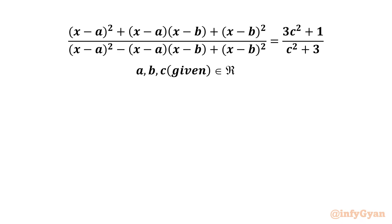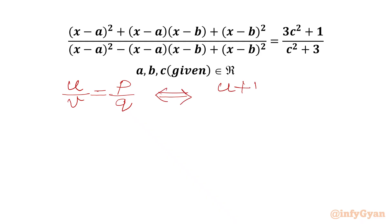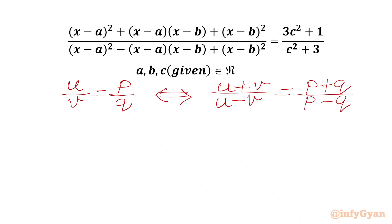Let's get started by writing one important result from algebra about fractions. If u over v equals p over q, then we can write u plus v over u minus v equal to p plus q over p minus q. This is also called componendo and dividendo. Let's prove it first.